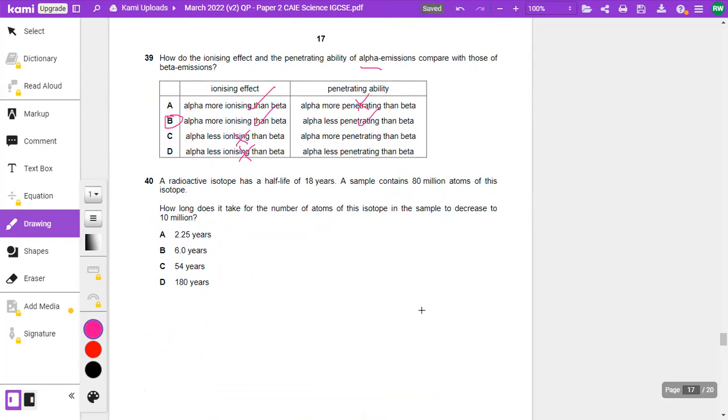Okay, and a radioactive isotope has a half-life of 18 years. So I'm going to write T half equals 18 years. A sample contains 80 million atoms of this isotope. How long does it take for the number of atoms in the sample to decrease to 10 million? Okay, so if we started off with 80 million, after 18 years, it will have gone down to 40 million. After another 18 years, it will have gone down to 20 million. It halves each time. And then after another 18 years, it is halved once again, and it has gone down to 10 million. So in that case, it is 18 times 3, which is, so this plus this equals the total time, and that is 54 years. And so there, the answer is C.